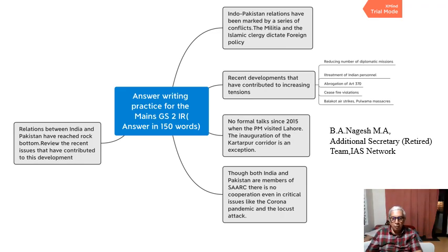The second point is cross-border terrorism. Pakistan is aiding militants in Jammu and Kashmir to carry out cross-border terrorism and is also aiding terrorist groups like Lashkar-e-Taiba. Pakistan is also playing a dominant role — with Chinese help — in preventing the mastermind of Lashkar-e-Taiba from being designated. Cross-border terrorism is an important issue affecting Indo-Pak relations.